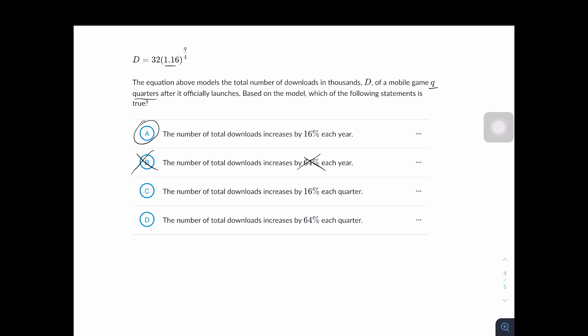C says that the number of total downloads increases by 16% each quarter. This answer choice would be correct if Q wasn't divided by 4. Then since Q is quarters, we could say that the number of total downloads increases by 16% each quarter. But since Q is being divided by 4, that's saying that it's increasing every year. So each quarter, that's the part that makes it wrong.